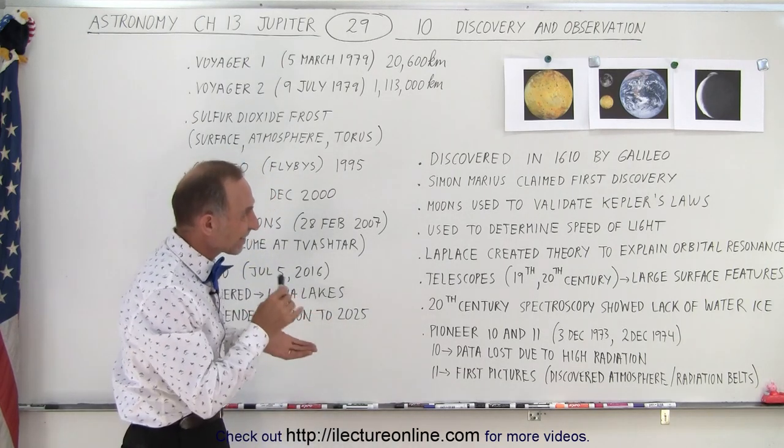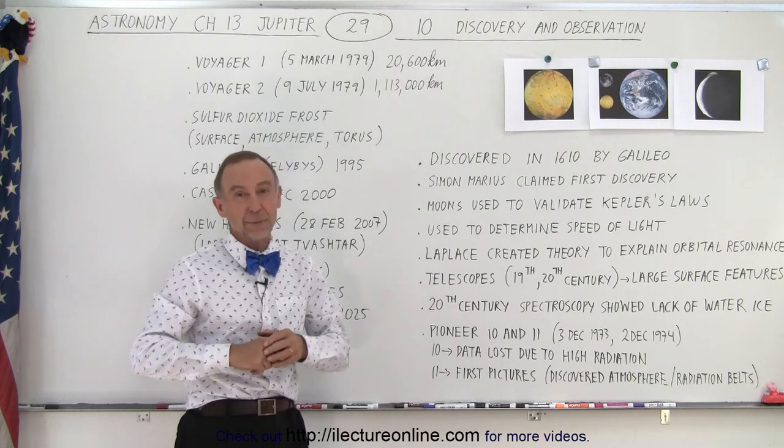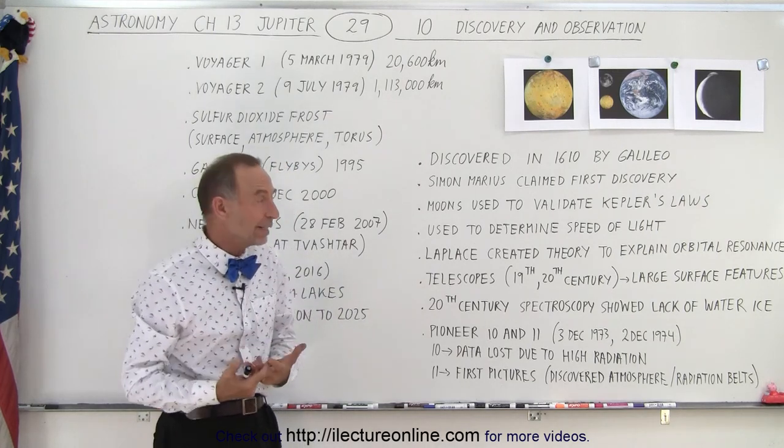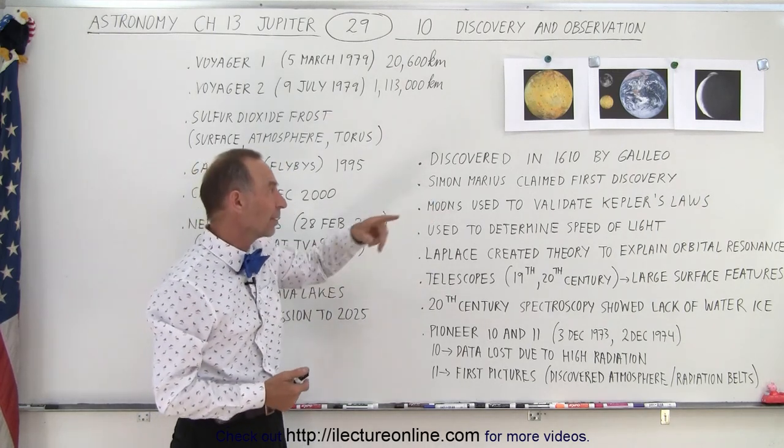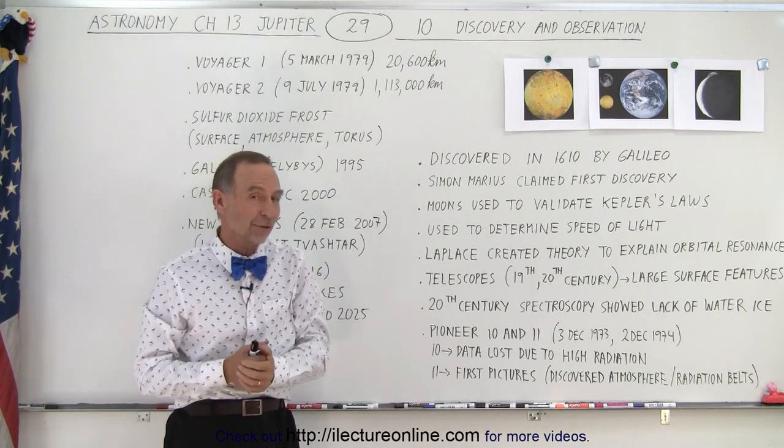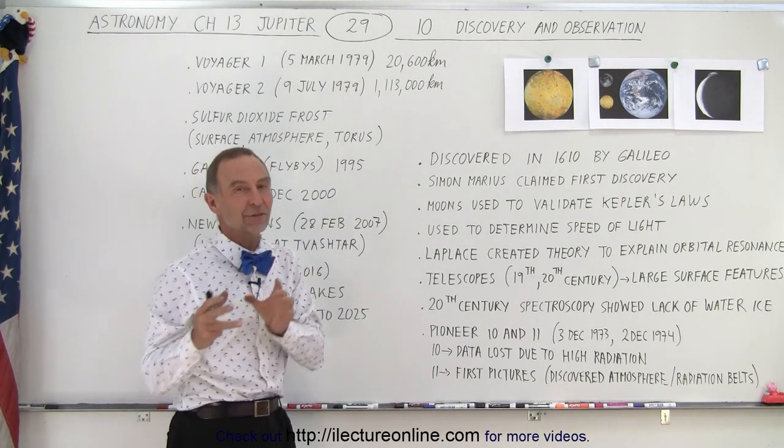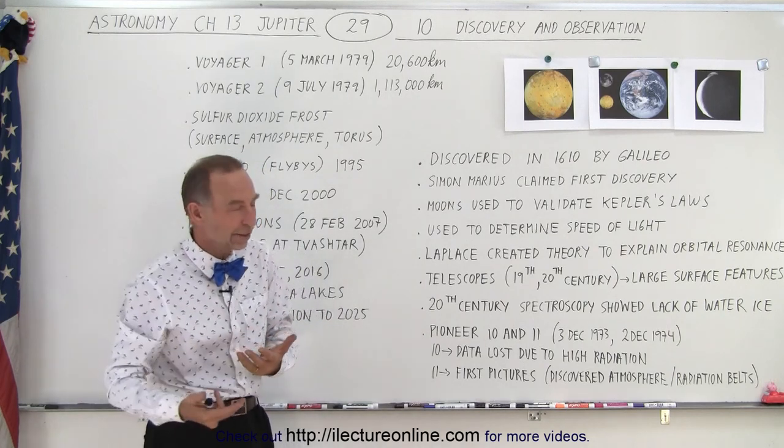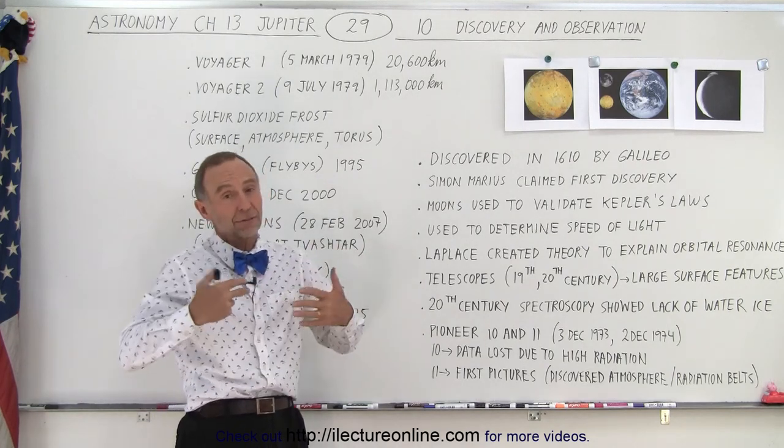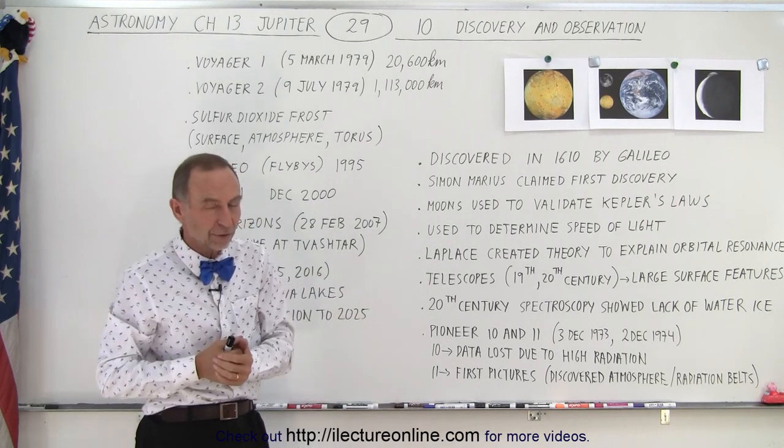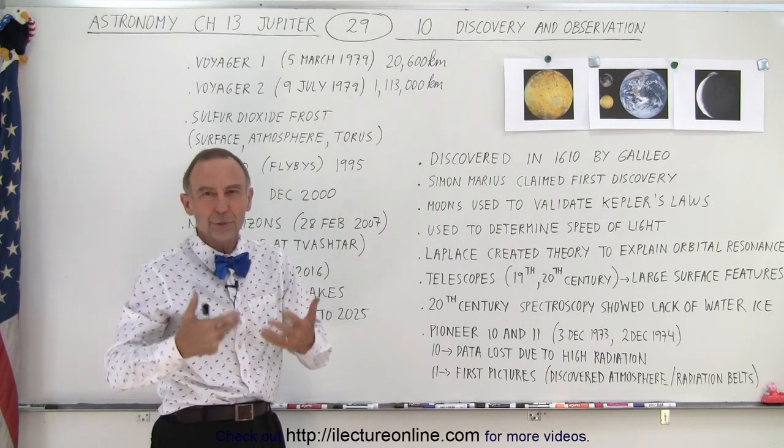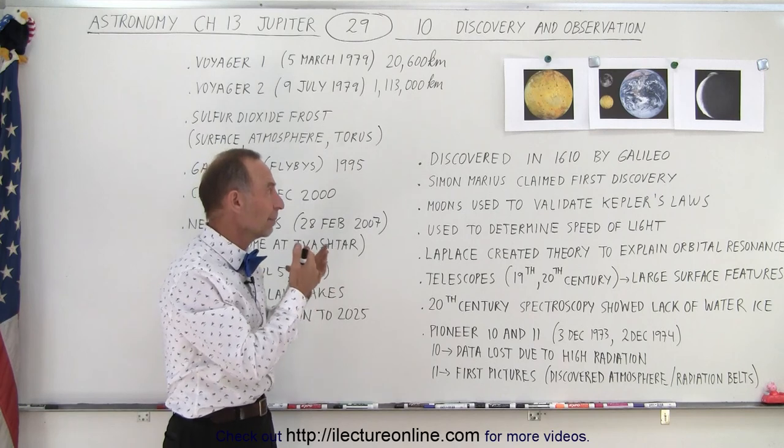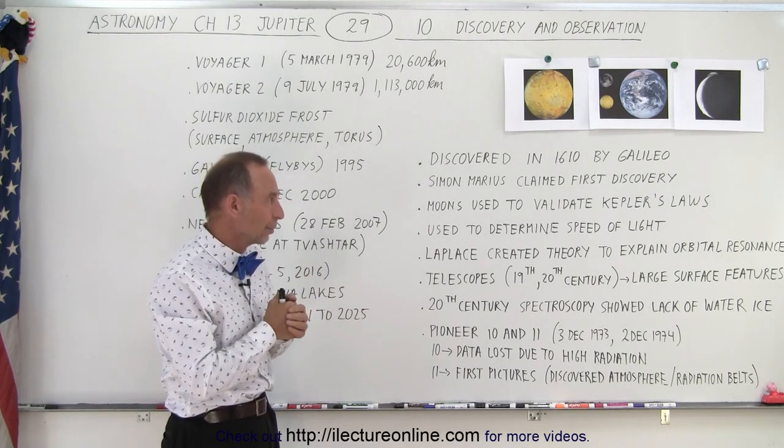So it was discovered in 1610 by Galileo. He was the first one to publish his findings, although Simon Marius claimed to be the first one to discover. He claimed that he discovered before Galileo, but he didn't publish it until several years later, and so therefore Galileo was given credit because he was simply the first one to publish it, and we have no real proof of record that Simon Marius had discovered earlier.